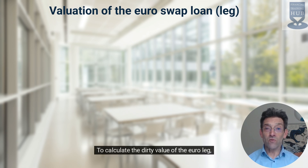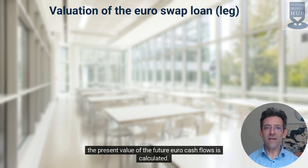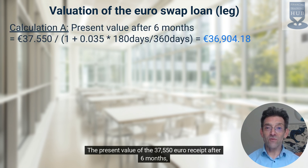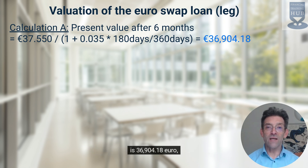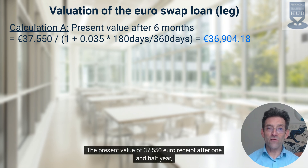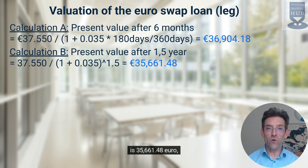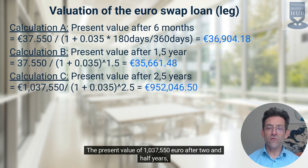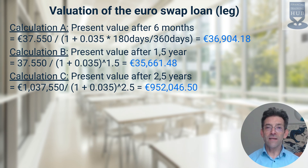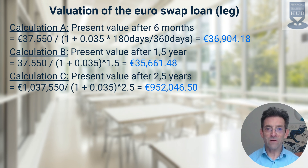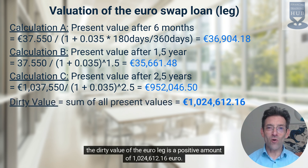To calculate the dirty value of the euro leg, the present value of the future euro cash flows is calculated. The present value of the €37,550 receipt after six months is €36,904.18 (calculation A). The present value of the €37,550 receipt after one and a half years is €35,661.48 (calculation B). The present value of €1,037,550 after two and a half years, the swap maturity date, is €952,046.50 (calculation C). By adding all present values, the dirty value of the euro leg is a positive amount of €1,024,612.16.